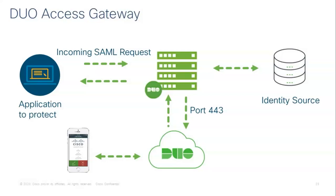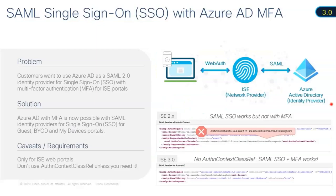Similar to the Duo Authentication Proxy, the Duo Access Gateway can also be installed on Windows or Linux servers. Something worth mentioning: with ISE 3.0, Azure AD with MFA is now possible when using SAML as your application mechanism. For example, if you want to use guest portals, BYOD portals, or other portals where you want to use MFA with a cloud AD, it is now possible with ISE 3.0 — which was not available in ISE 2.0 due to limitations in the authentication mechanism.